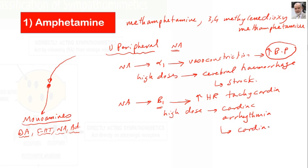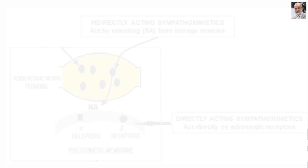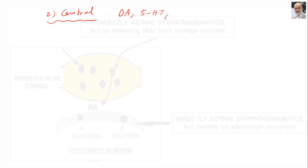All the peripheral effects of amphetamine are not favorable — they have no clinical application. To summarize the peripheral effects: amphetamine can increase heart rate producing tachycardia, increase blood pressure, and in high doses can result in cerebral hemorrhage. Centrally, amphetamine and amphetamine-like drugs increase the release of neurotransmitters such as dopamine, 5-hydroxytryptamine, and noradrenaline, resulting in different central effects.